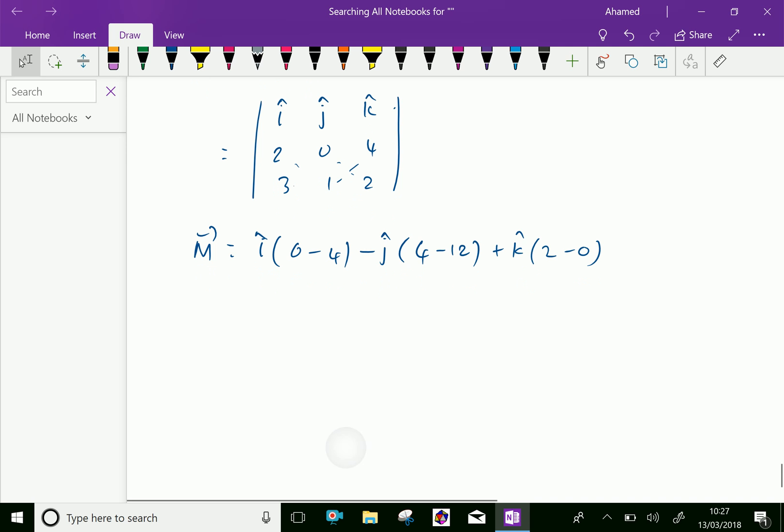Minus 3 into 0 is 0. So, we can write minus 4i, and 4 minus 12 is minus 8 into minus is plus 8j, and plus 2k is our moment vector. It is also represented by torque.